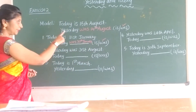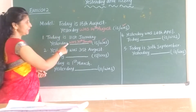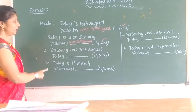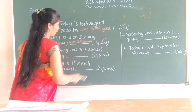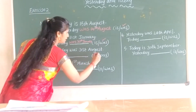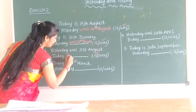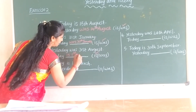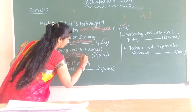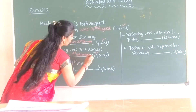Today is 31st August. Today means 'is'. Today is 1st September. Okay?